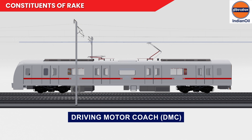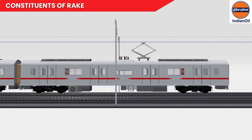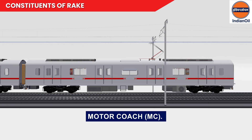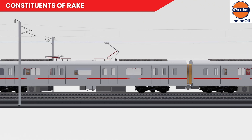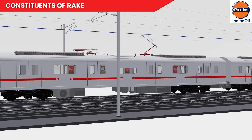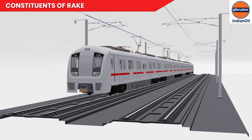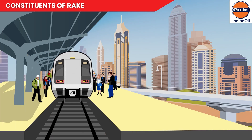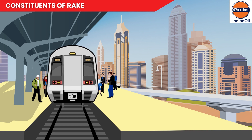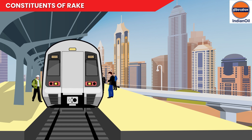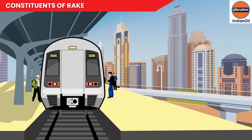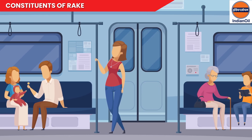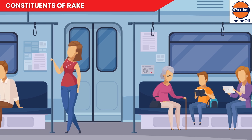Generally, a rake is of three types: the driving motor coach (DMC), trailer coach (TC), and motor coach (MC). The three units are attached in a specific sequence to create the rake. The arrangement and number of coaches are defined based on the population density traversing in a given period of time from one place to another, which in turn also determines the length of the rake.